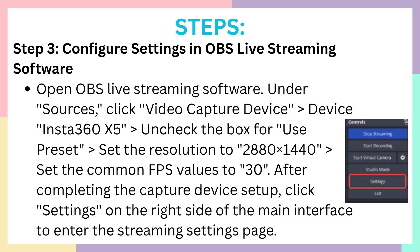Step 3: Configure settings in OBS live streaming software. Open OBS, and under Sources, click Video Capture Device. In the Device field, select Insta360 X5. After that, uncheck the box for Use Preset and set the resolution to 2880 x 1440. Then set the common FPS value to 30.